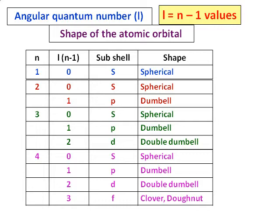In an atomic orbital, when n = 1, l can only take a value of 0. We give it the symbol s, and the shape is spherical. Similarly, when n = 2, l can take values 0 and 1 — it has two subshells, s and p, with shapes spherical and dumbbell.